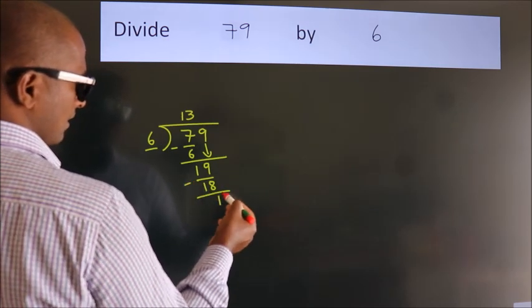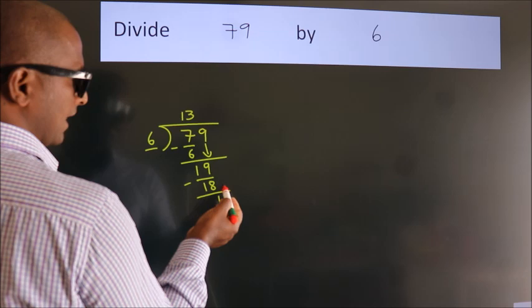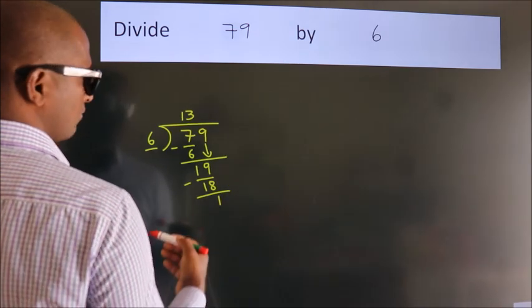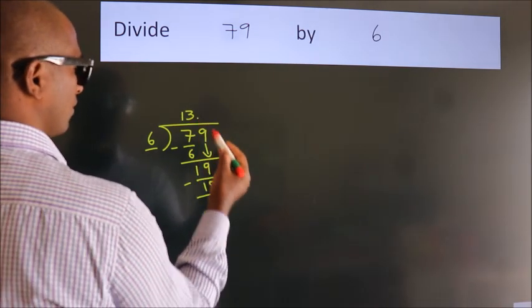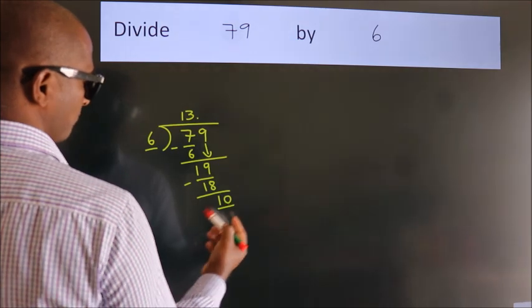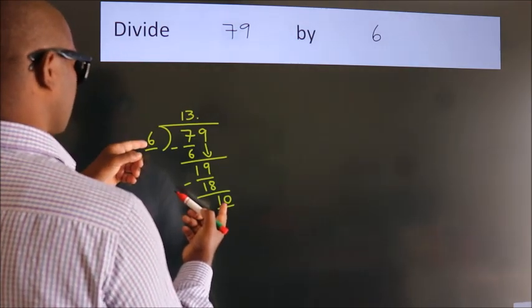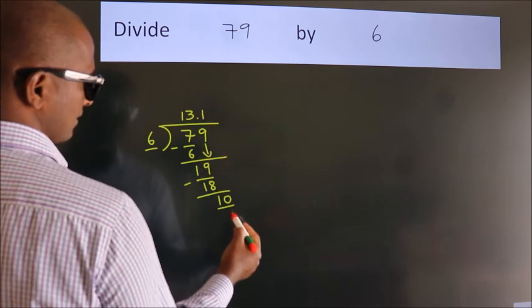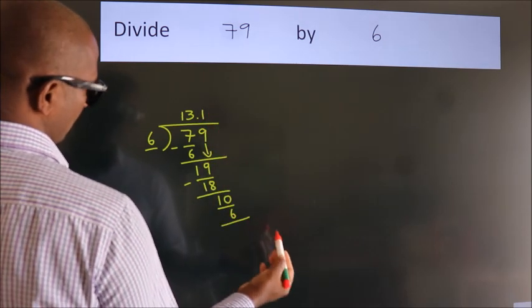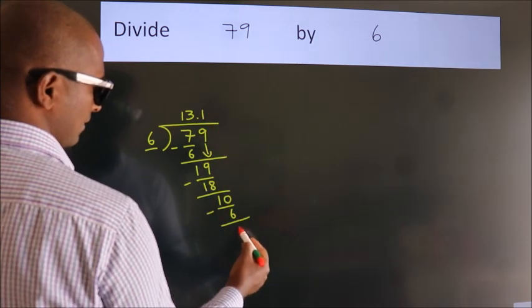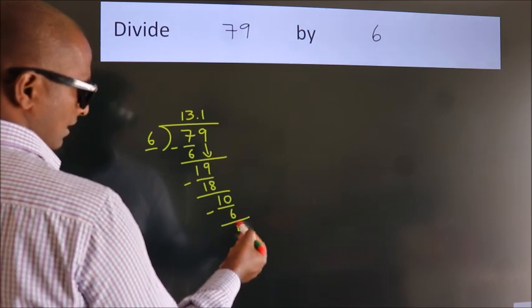After this, no more numbers to bring down. So what we do is put a dot and take 0, giving us 10. A number close to 10 in the 6 table is 6 ones, which is 6. Now we subtract and get 4.